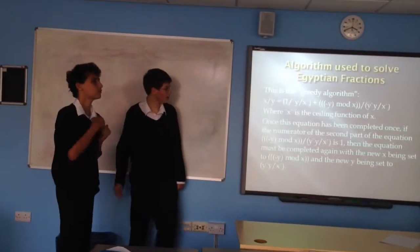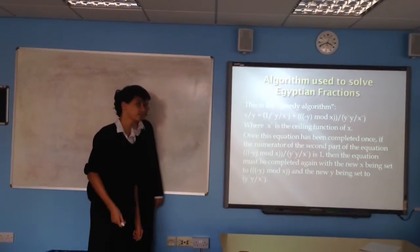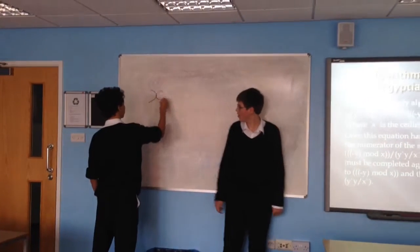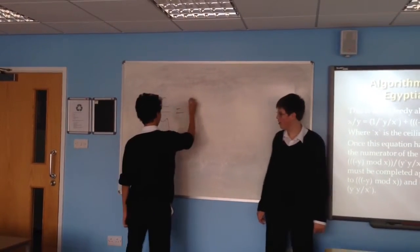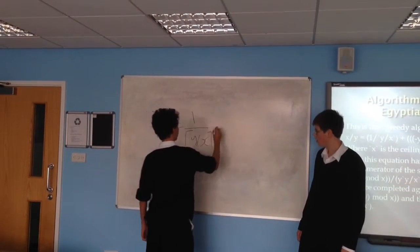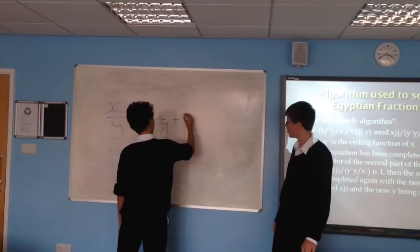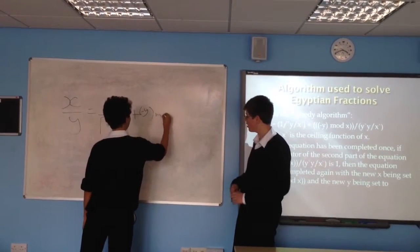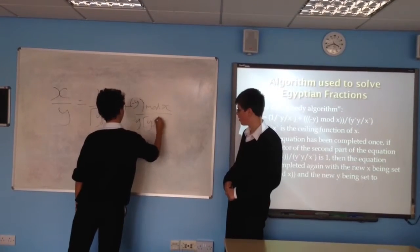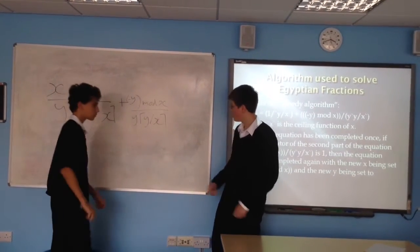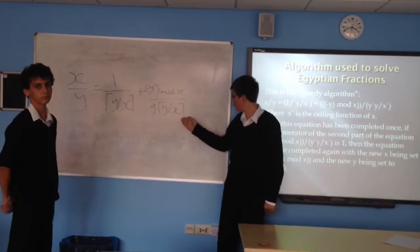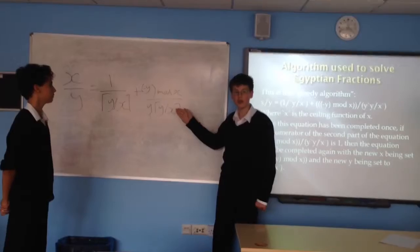The algorithm used to solve Egyptian fractions is the greedy algorithm, which states: x/y equals 1/⌈y/x⌉ plus ((-y mod x) / (y · ⌈y/x⌉)), where the ceiling function symbols mean you round any decimals up to the nearest whole number.